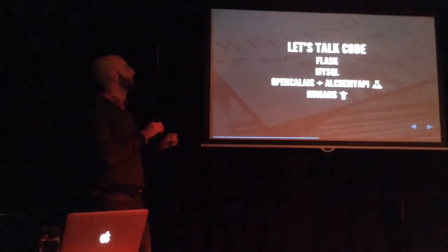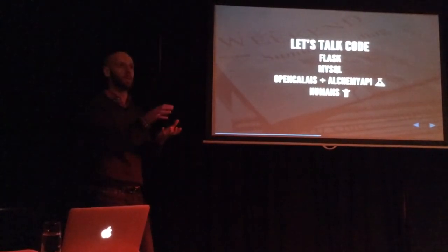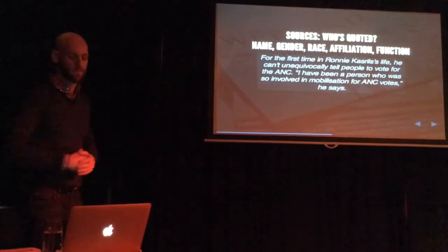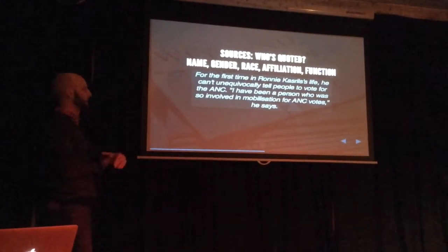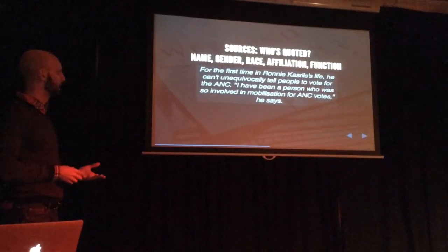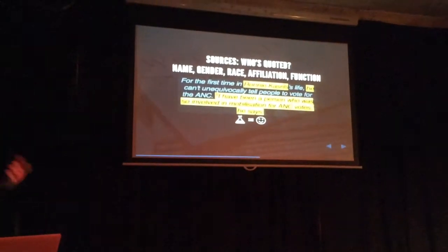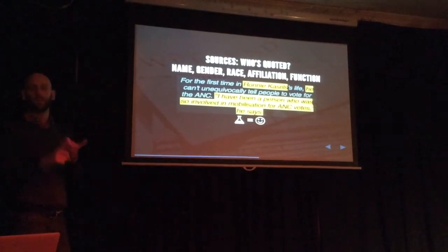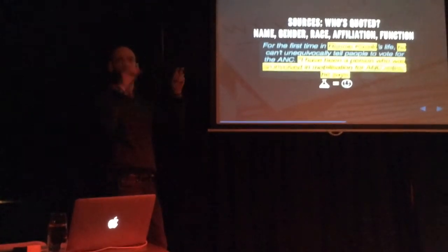What those APIs let you do is: you give them the text of an article, and they pull out entities — they try to identify interesting keywords, and they also do quotation extraction. It turns out humans are also very important in this process. In terms of sources, we want to know the name, gender, race, political affiliation, and function. For example, for the text: 'For the first time in Ronnie Kasrils's life, he can't unequivocally tell people to vote for the ANC' — the APIs pick up Ronnie Kasrils, link it to 'he' so we can infer gender, and pick up the quotation linked to him. It's pretty good.